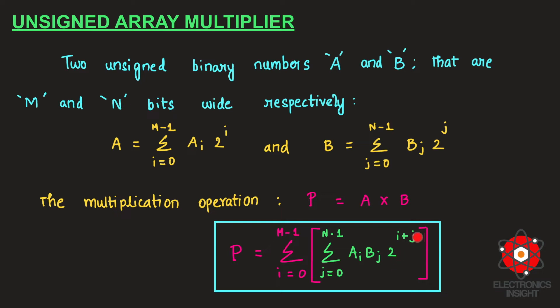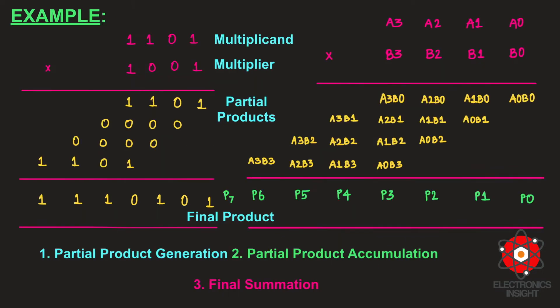The final multiplication product P becomes the double summation from i=0 to m−1 and j=0 to n−1 of a_i × b_j × 2^i × 2^j. When we have exponents 2^i and 2^j, we can add them to get 2^(i+j). We now concentrate on a 4×4 unsigned array multiplier design.